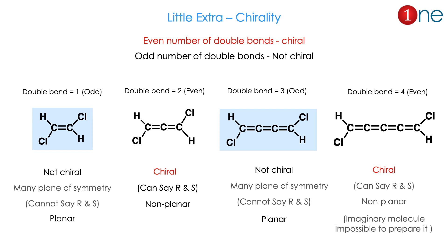Even number of double bonds in allenes are chiral; odd number of double bonds in allenes are not chiral. Allenes are basically defined by cumulative double bonds. A simple alkene with one double bond is planar due to sp2 carbon, so it is not chiral. The two-double-bond system — our present system — is chiral and non-planar, so we can say R and S. With three double bonds the compound becomes planar again and is not chiral. With four double bonds it is also even, so it is chiral.